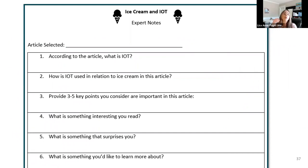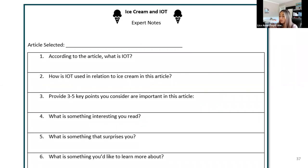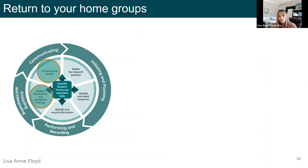The document asks: what is IoT, what is IoT used for in relation to ice cream in this article, a few interesting points, something surprising, and something they'd like to learn more about. Students answer these questions in expert groups, relying on one another, then agree on answers to share with their home groups.